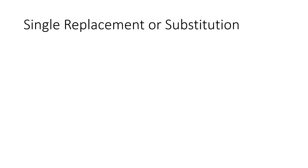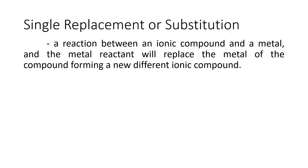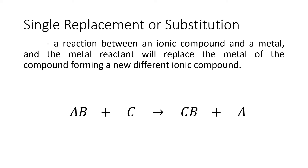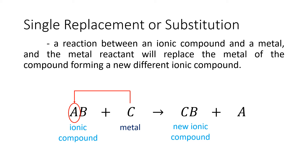Let us now proceed with the next chemical reaction: single replacement, also known as substitution. This is a reaction between an ionic compound and a metal, where the metal reactant will try to replace the metal of the ionic compound to form a new, different ionic compound. So if we have AB plus C, this produces CB plus A, where AB is an ionic compound, A is the metal, B is the non-metal, and C is the replacing metal.